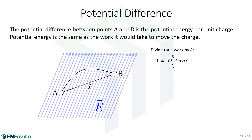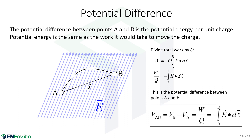W over Q has units of volts, and what we've calculated is the potential difference between points A and B. We can write this as VAB — the potential difference between A and B — which equals VB minus VA, or the total work divided by charge Q, or the line integral of E dot dL from A to B with a negative sign in front. This is how we calculate the potential difference between two points.